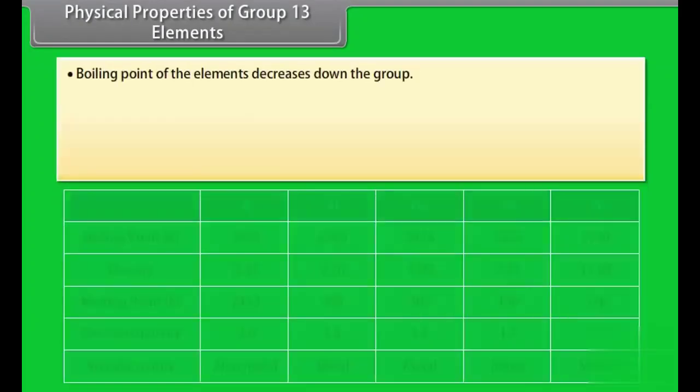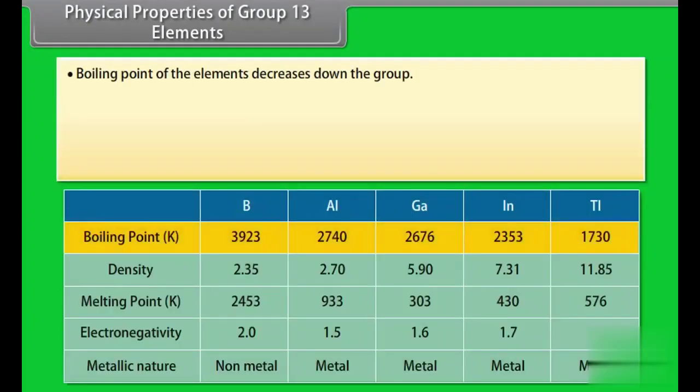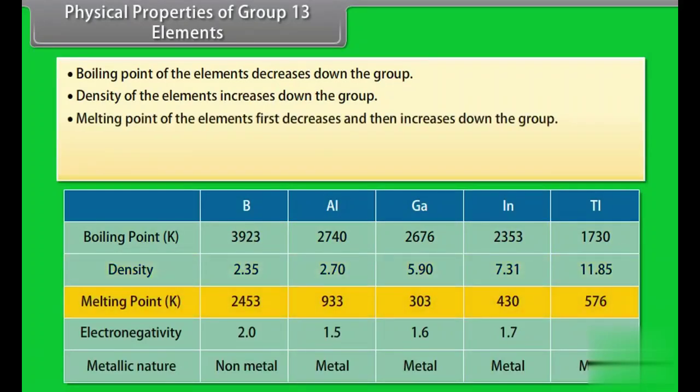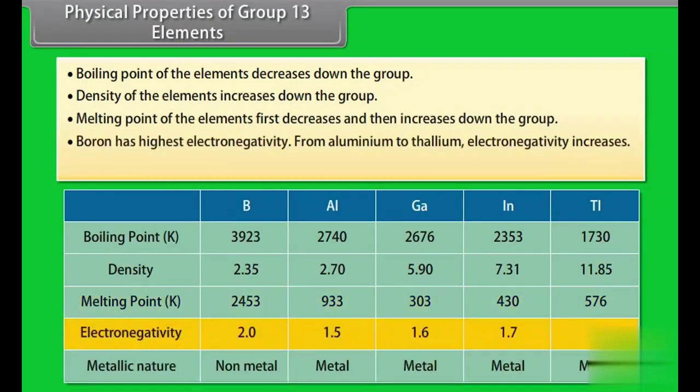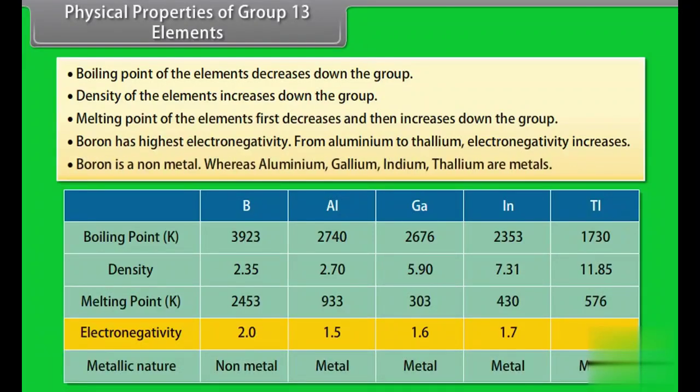Physical properties of group 13 elements. Boiling point of the elements decreases down the group. Density of the elements increases down the group. Melting point of the elements first decreases and then increases down the group. Boron has highest electronegativity. From aluminium to thallium, electronegativity increases. Boron is a non-metal whereas aluminium, gallium, indium, thallium are metals.